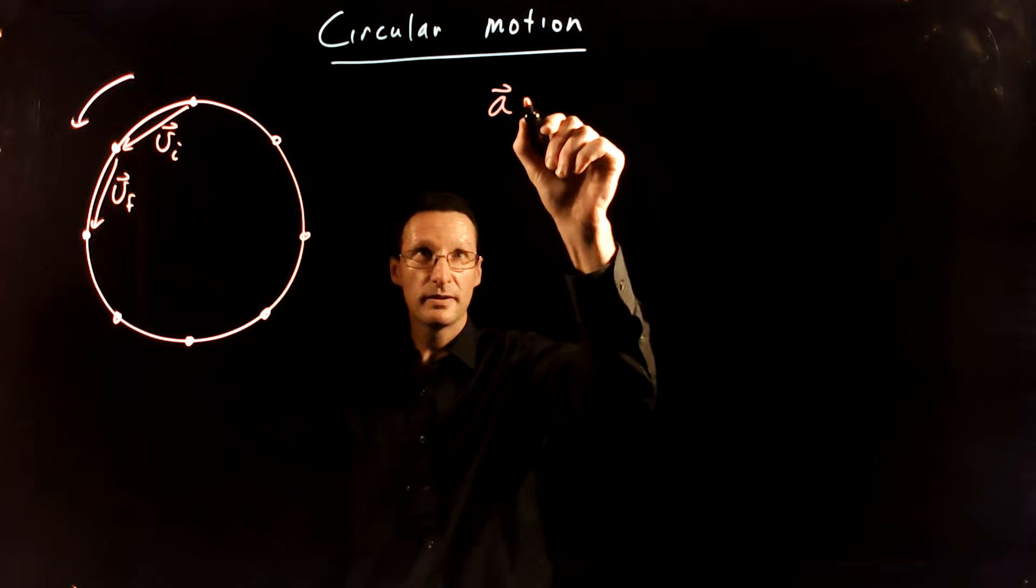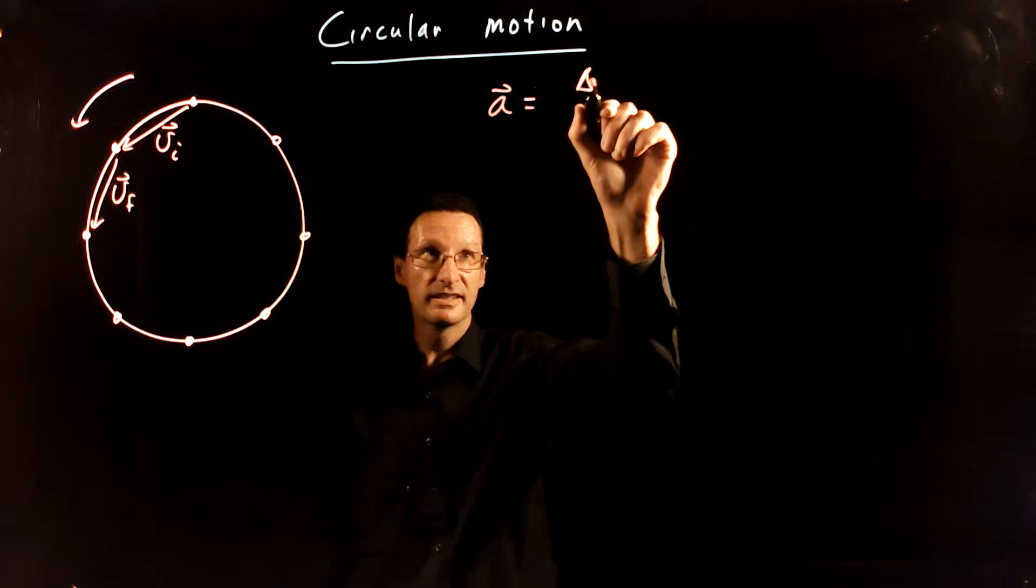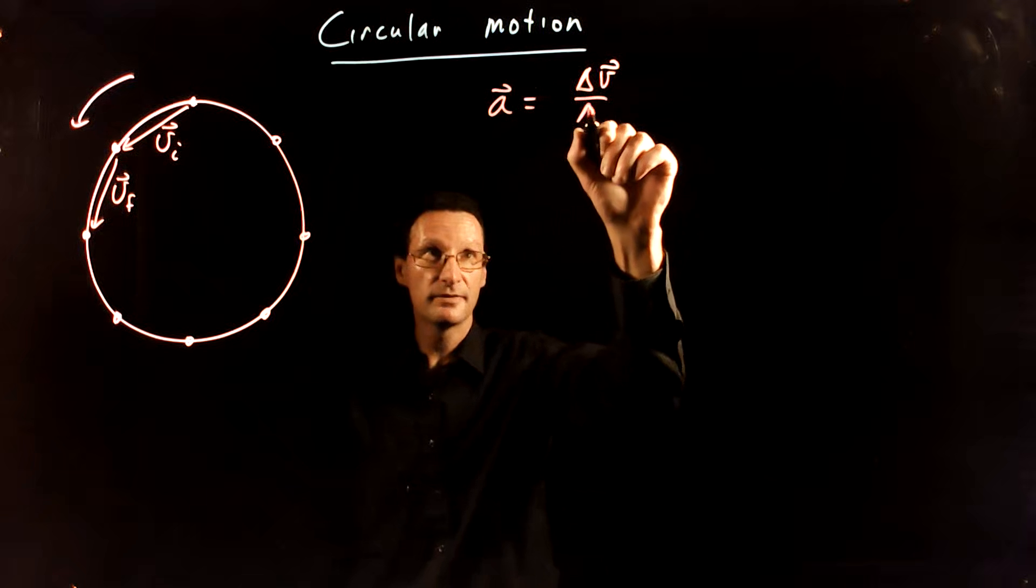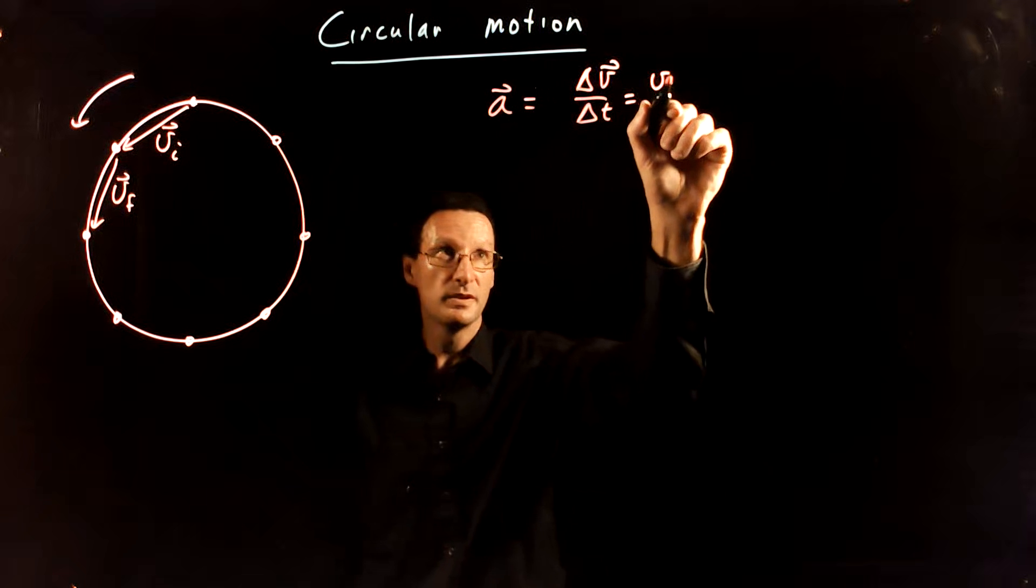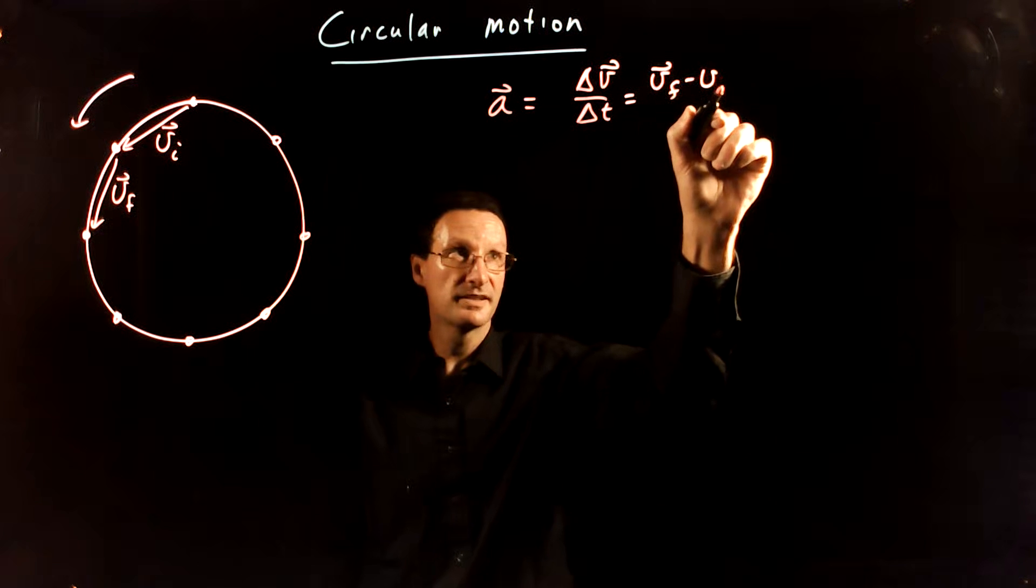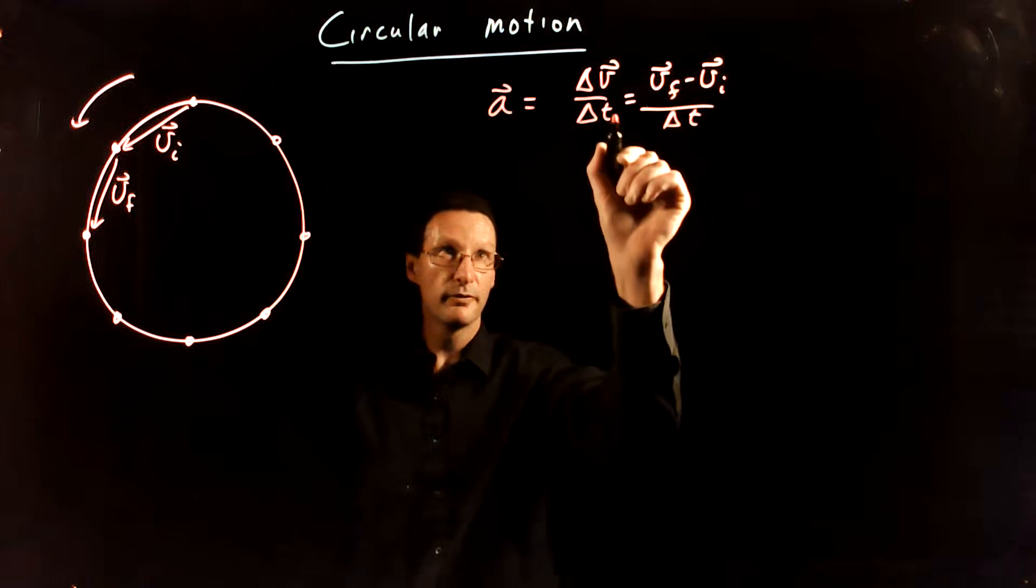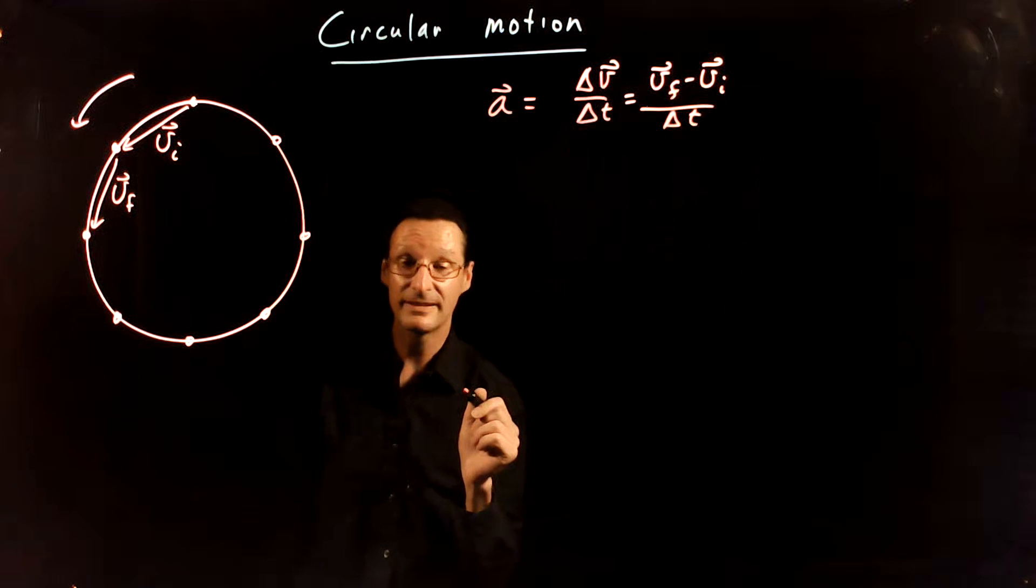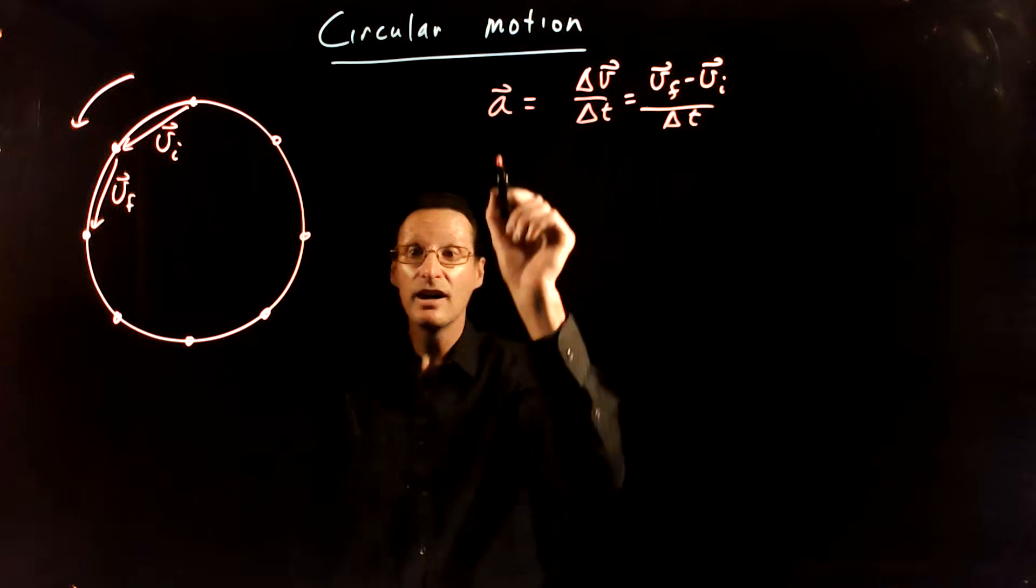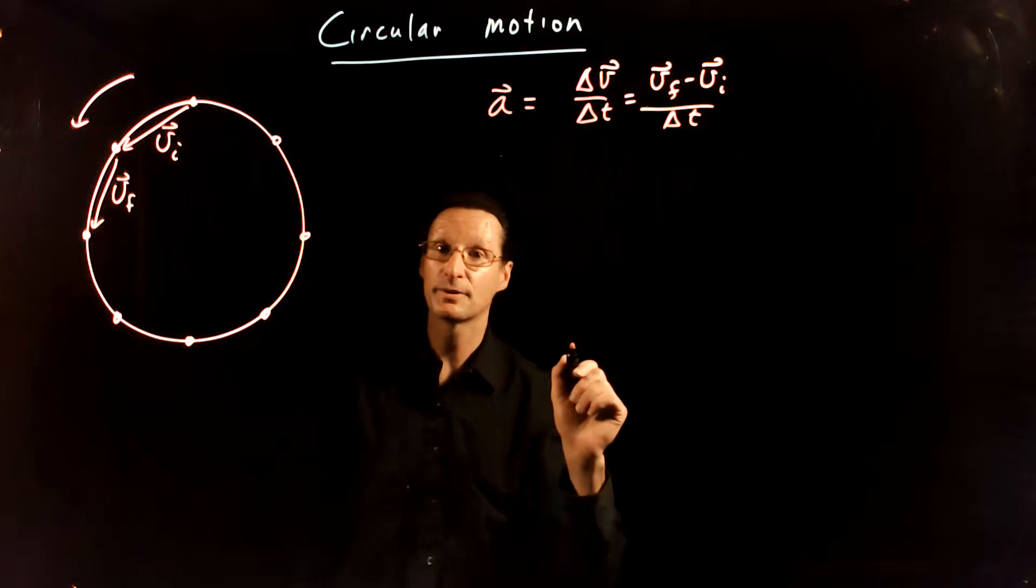The reason we want to think about that is because remember that the acceleration is defined as the change in velocity over time, which is just a change in velocity is v final minus v initial as vectors over the time interval. So if we can find out what the change in velocity vector direction is, that tells us the direction of the acceleration vector.